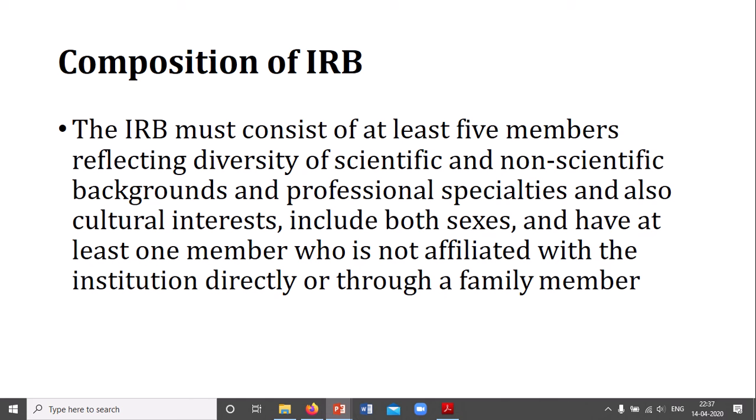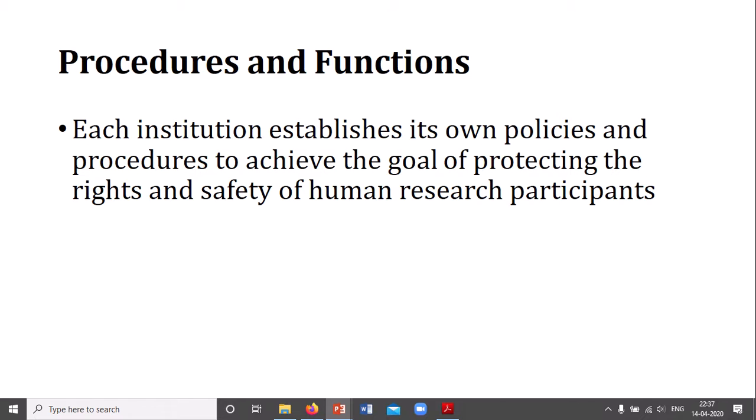There should be at least one independent member who is not directly related to the institute or connected through any family member. Each institute can establish its own policies and procedures to achieve the goal of protecting the rights and safety of human research participants. These may vary from country to country and from organization to organization, but they all have to follow the same general procedures and protocols.